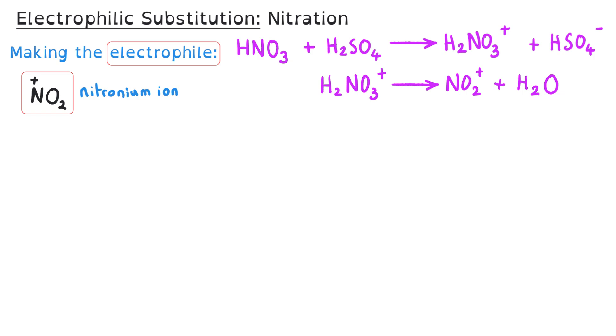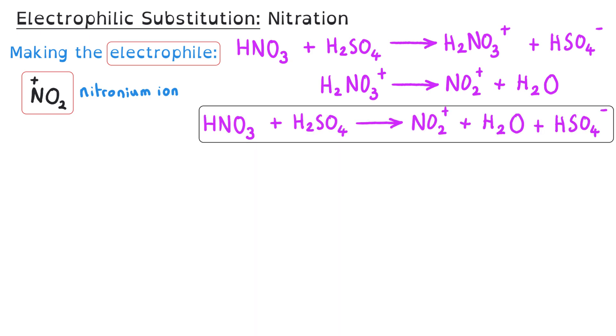This reaction can be shown in two steps, as I've done at first, or we can combine it into one step, where we've got the nitric acid reacting with the sulfuric acid going straight through to the nitronium ion electrophile and the water and the HSO4-.